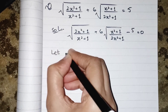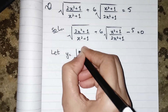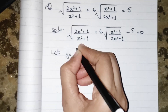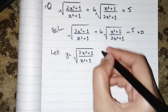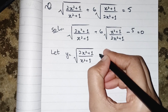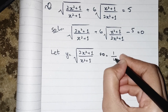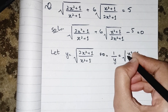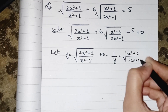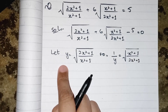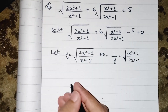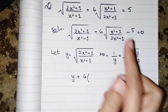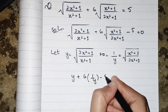Now we notice both expressions are the same. Let y equal the square root of (2x²+1)/(x²+1). When this equals y, then 1/y will equal the reciprocal: (x²+1)/(2x²+1). We substitute y and 1/y in place of the respective roots, giving us: y plus 6 times (1/y) minus 5 equals zero.